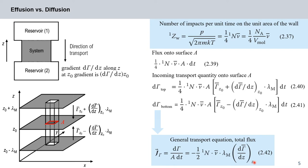There is a minus sign because flow occurs in the direction of a gradient. From equation 2.42, we find that the flux j is proportional to: the density of the particles, the mean velocity of the particles, the mean free path length, and the gradient of the transport quantity.